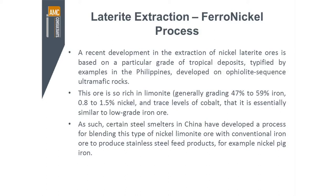A number of producers generate ferronickel, and this is a relatively recent development where the ore is quite rich in limonite. As discussed, limonite is fundamentally an iron ore, but in these instances the limonite contains a significant amount of nickel and some traces of cobalt, generating a product that is a combination of iron and nickel — so you're almost partway to the production of steel. It's quite an attractive production process, and there's a lot of production heading into China to feed Chinese demand for ferronickel.